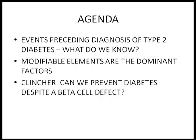This talk is about insulin resistance being dominant in the pathogenesis of type 2 diabetes. My disclaimer is that I am not going to talk about insulin resistance and beta cell defect after diabetes has occurred. Whatever I am going to talk about is the run-up to the pathogenesis and what happens before diabetes actually sets in, because we are not here to discuss the relative contributions of either after type 2 diabetes has occurred. The agenda is: what are the events preceding diagnosis of type 2 diabetes, and what do we know so far.